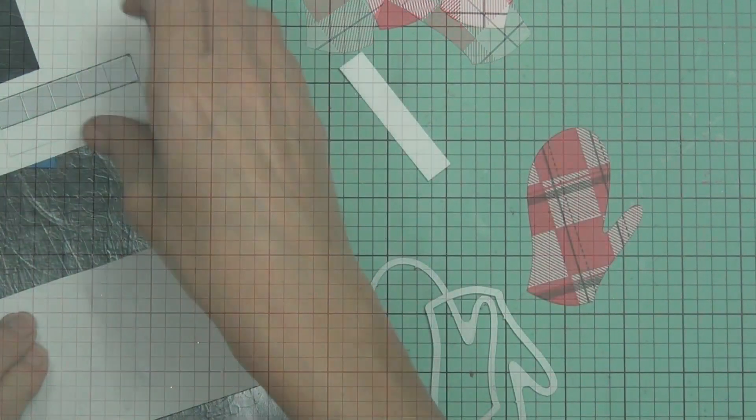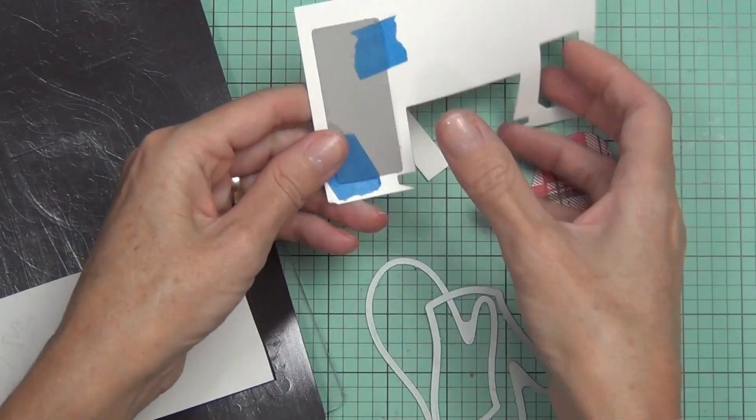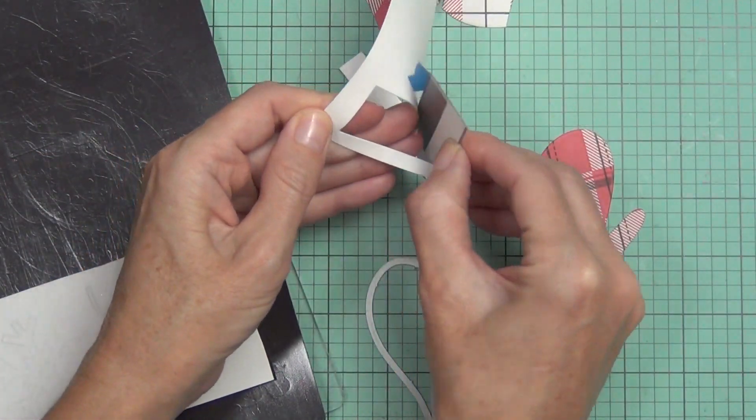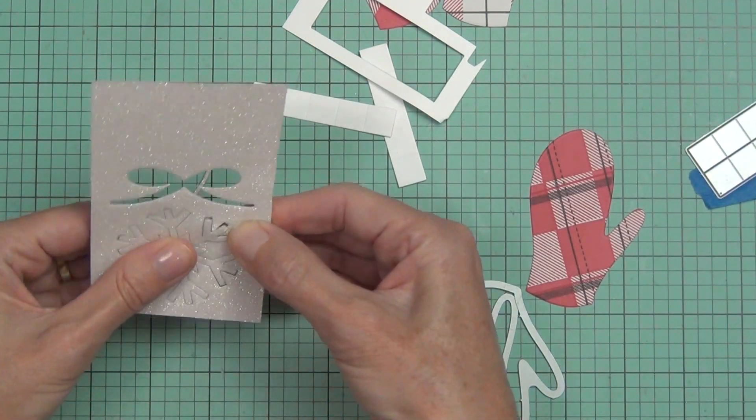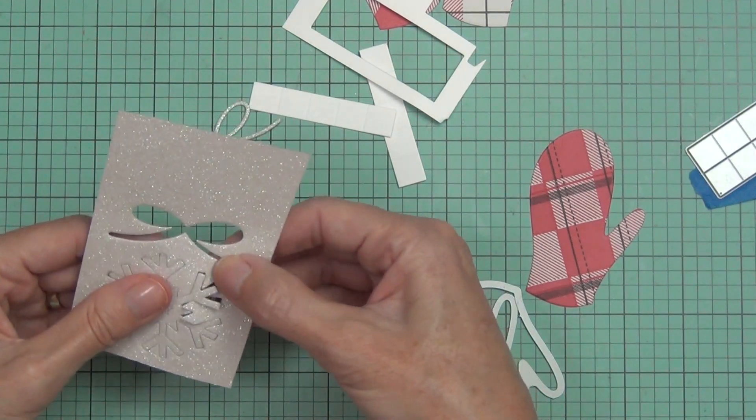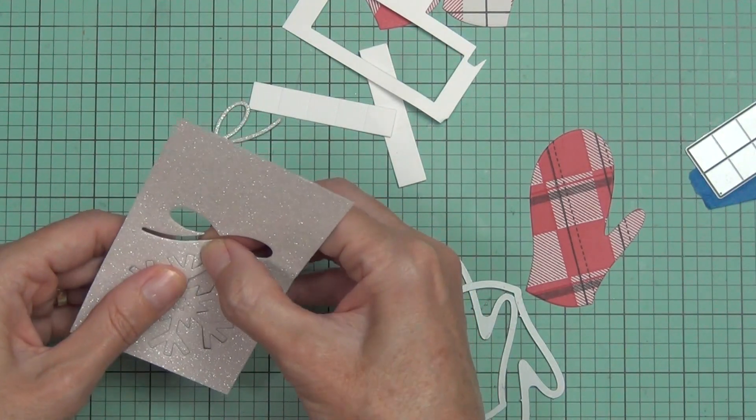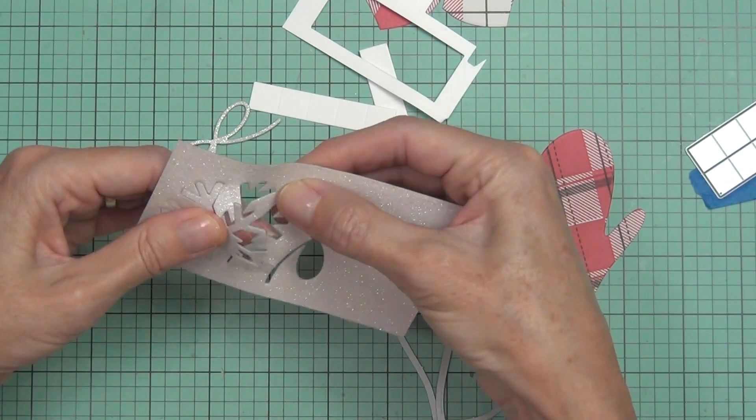All right, so there's this rectangle die in the set and that cuts out two pieces and also has a few different sort of snowflake dies. And I'm using my Gemini Junior to do my die cutting at the moment.